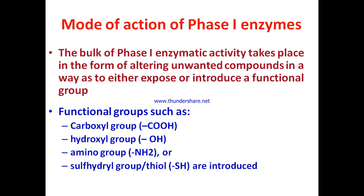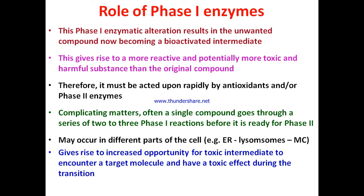The bulk of phase one enzymatic activity takes the form of altering compounds to either expose or introduce a functional group — such as carboxyl, hydroxyl, amino, or sulfhydryl groups. These introduced functional groups bioactivate the xenobiotics, forming activated intermediates that are more reactive and potentially more toxic and harmful than the original compounds, and therefore must be acted upon rapidly by antioxidants or phase two enzymes.